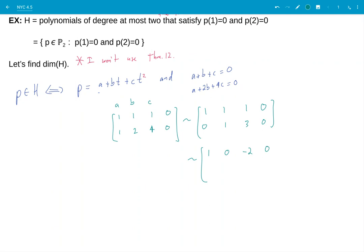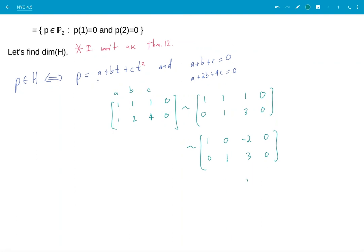So reducing all the way to reduced echelon form. Minus two, zero, zero, one, three, zero. So I get A is equal to negative two plus two C. B is equal to minus three C.